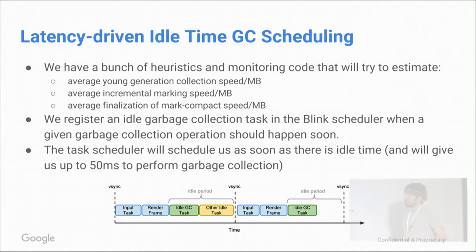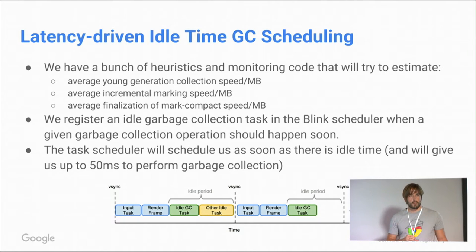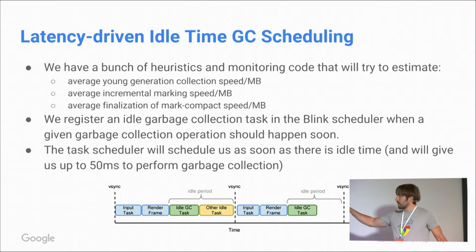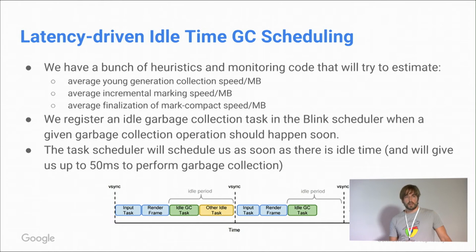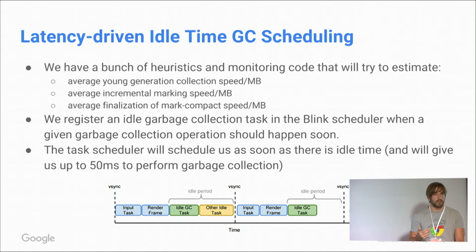The Blink scheduler calls us back and can give us up to 50 milliseconds of idle time, depending on what's going on. If there's constant rendering, it will be up to 16 milliseconds. If there's less rendering pressure, the Blink scheduler gives us up to 50 milliseconds, with the idea that other important input events may come in, and we don't want to be in their way.